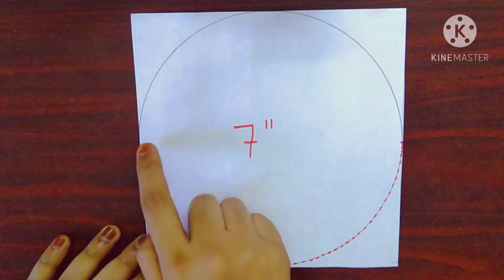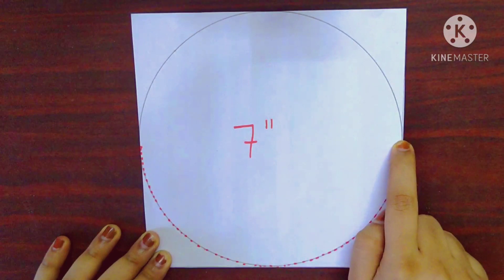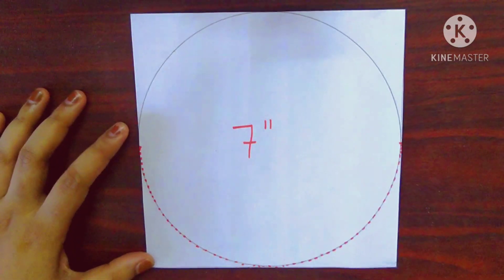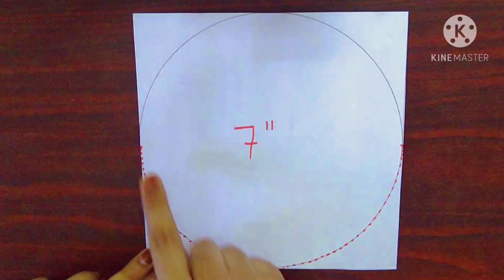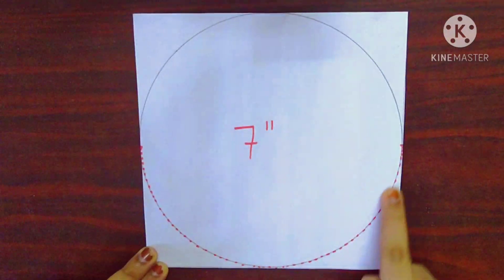For the template I have taken a 7 inch square. Inside the square I have drawn a circle of 7 inches diameter. I will be removing these two corners by cutting along this line.